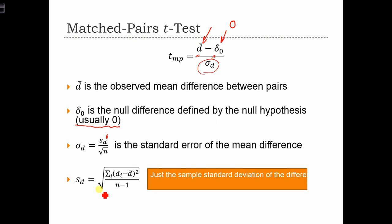So s sub d is the square root of the sum of the squared deviations over n minus 1. That's exactly the standard deviation formula, but we're applying it to this new variable dᵢ instead of to the x's or y's.